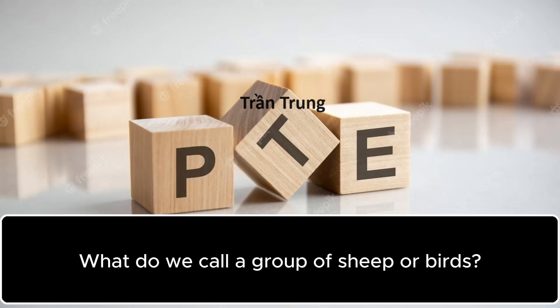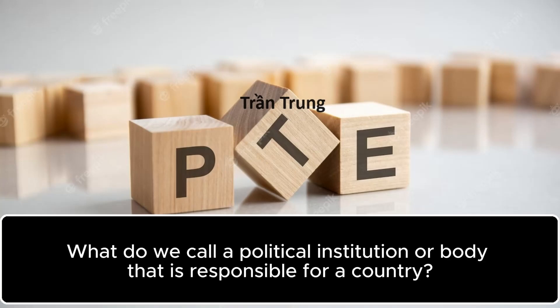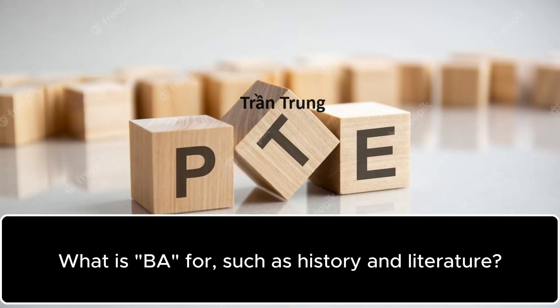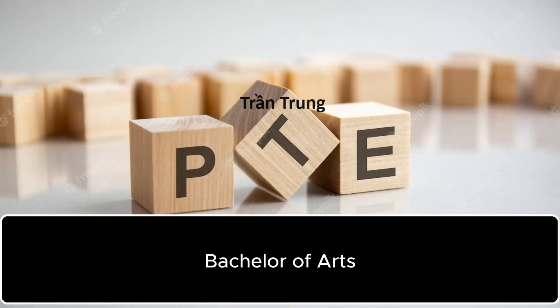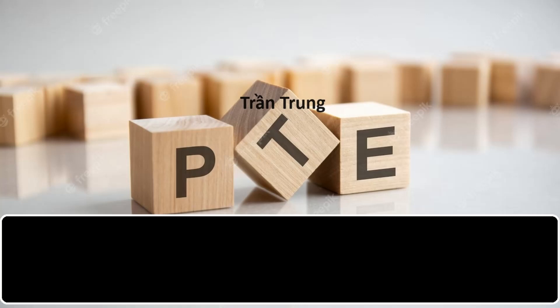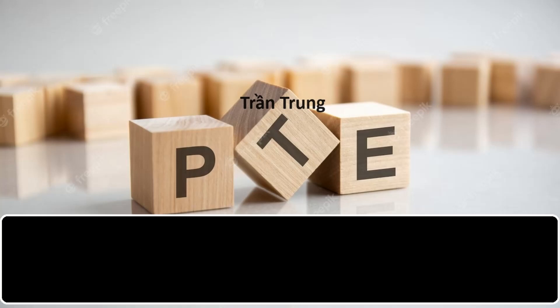What do we call a group of sheep or birds? Flock. What do we call a political institution or body that is responsible for a country? Government. What is a BA, such as history and literature? Bachelor of Arts. What do we call a short piece of writing containing the main ideas in a document? Summary. What do we call a person who is in charge of a meeting? Chairman.